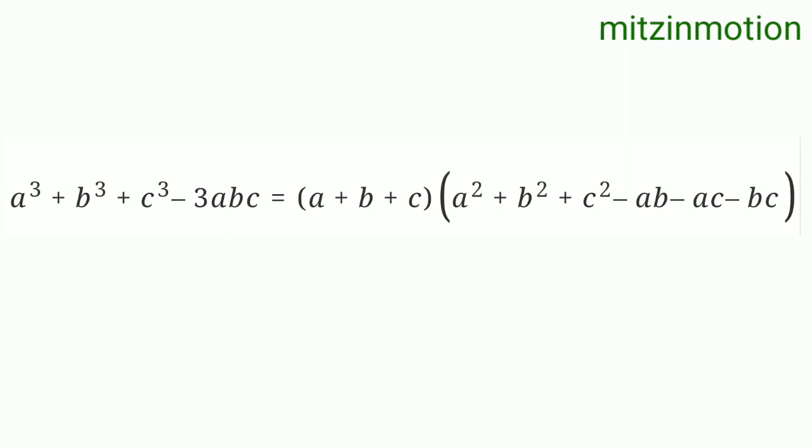a³ + b³ + c³ - 3abc = (a + b + c)(a² + b² + c² - ab - bc - ca). As I told you, this is the longest formula, but you have to learn this.